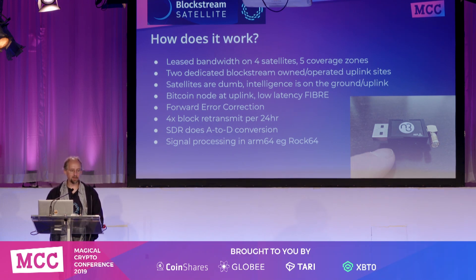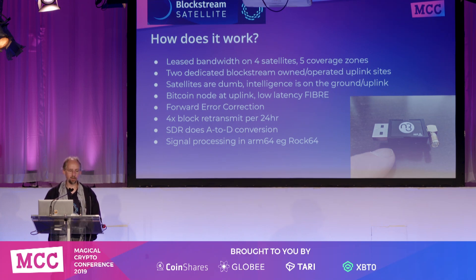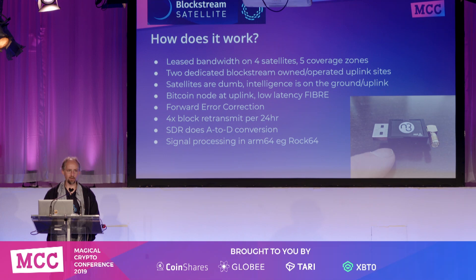The satellites themselves are relatively dumb pieces of equipment — they don't do any advanced switching, authentication, or digital processing in general. Most of the intelligence is actually on the ground station at the uplink. Our uplink is running redundant power, redundant internet connection, and a Bitcoin full node. It tries to receive Bitcoin data with very low latency using Matt Corello's Fiber protocol, then broadcasts the analog encoding to the satellite using forward error correction. It retransmits the blocks about four times a day, so you can recover from a local power cut and be fully back online within four to six hours.